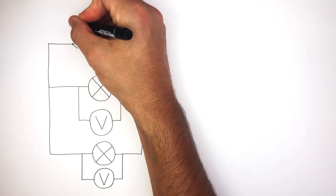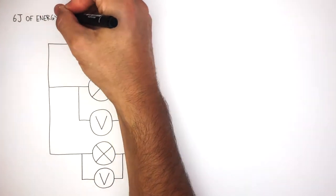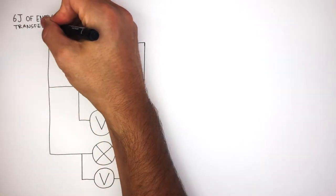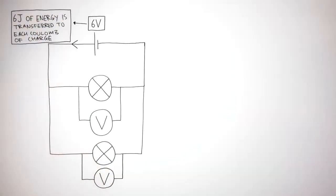In this parallel circuit we're using a six volt cell. Six volts means six joules of energy is transferred to each coulomb of charge. Conventional current goes from positive to negative.